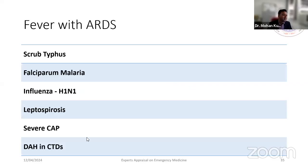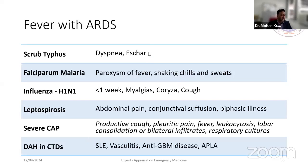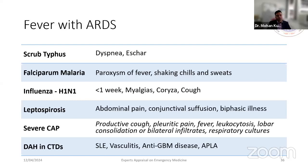For fever with ARDS, differentials again include scrub typhus (look for eschar), malaria (chills and rigors), H1N1 or COVID (coryza history), and community-acquired pneumonia — which would show localizing respiratory symptoms like cough, leukocytosis, and lobar consolidation on chest X-ray, or positive sputum culture. Connective tissue diseases such as lupus, vasculitis, and APLA can also present with fever and ARDS through diffuse alveolar hemorrhage.